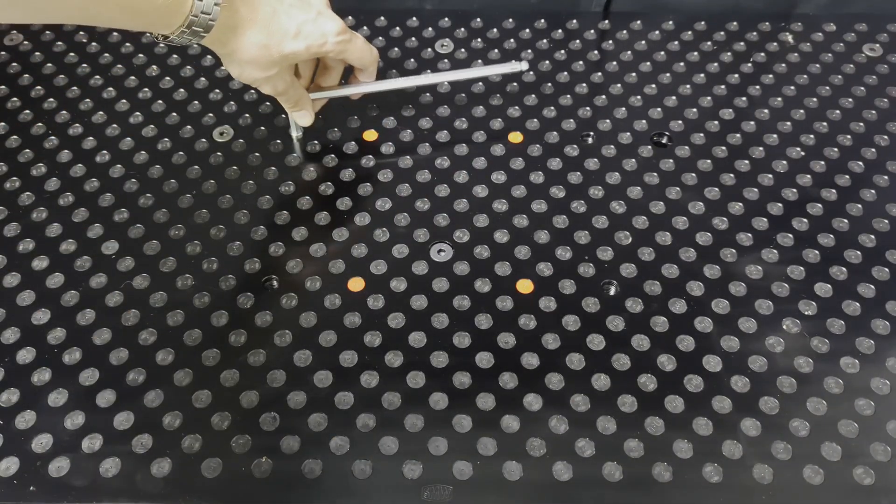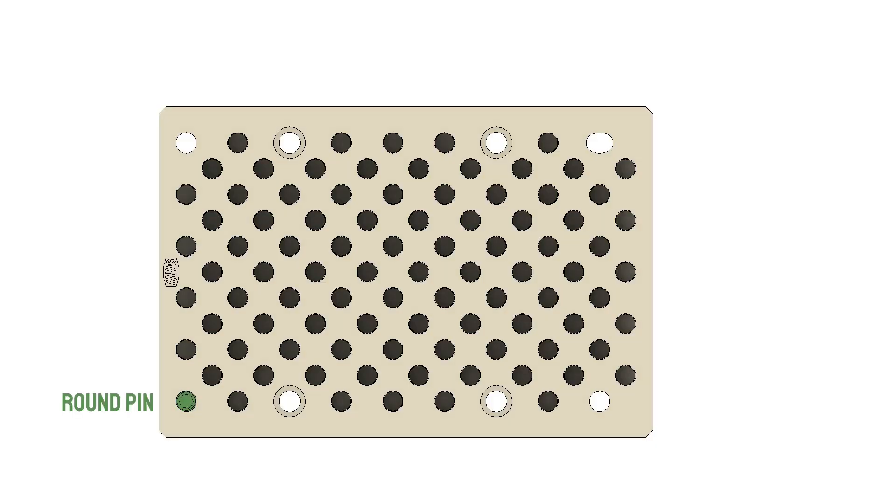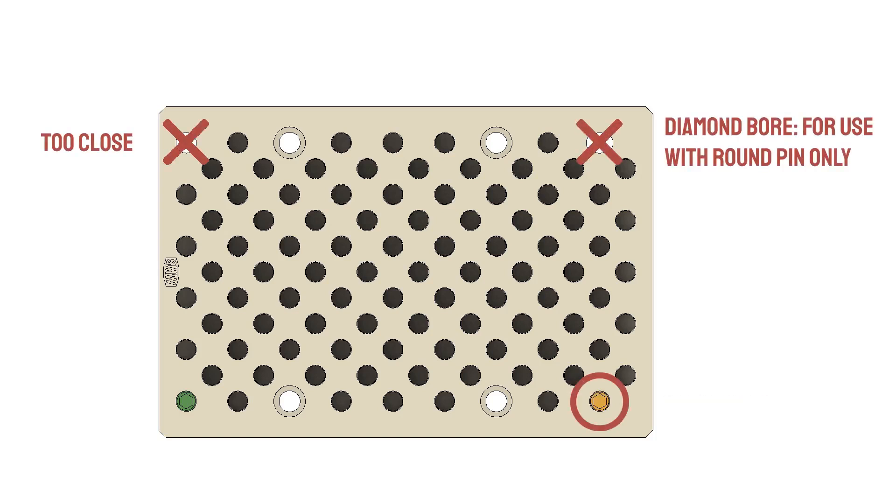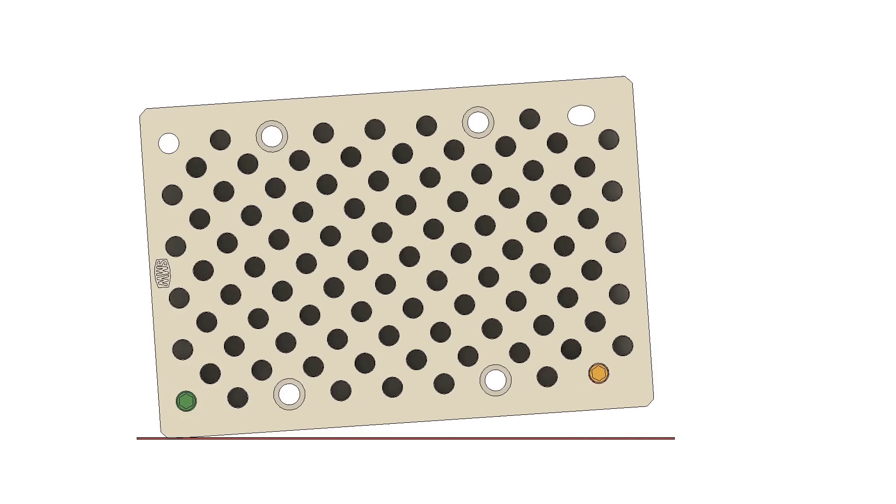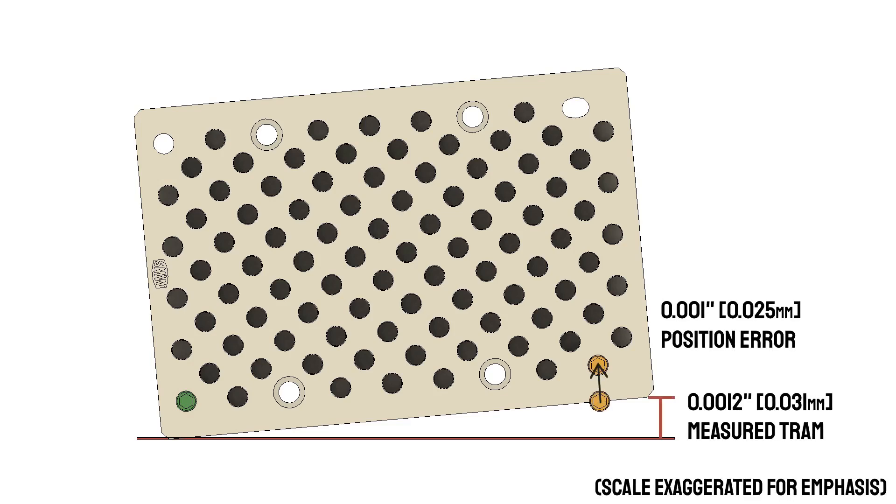For the most accurate angular position, there are two considerations for installing the diamond pin. The first is bore location. We recommend selecting a hole as far as possible from your round pin, because the longer the distance between the two, the smaller the angle created by any location error of that second pin. That is to say, your pallet will have better tram the further apart these two pins are.